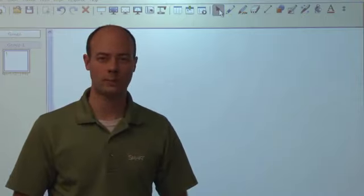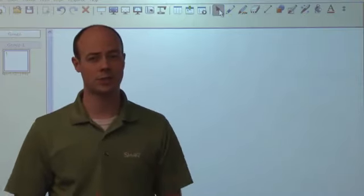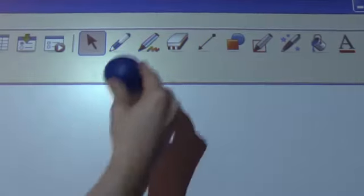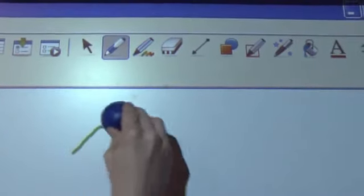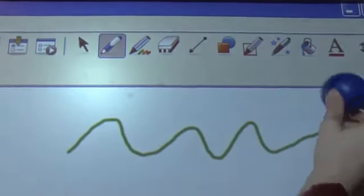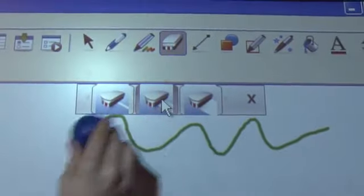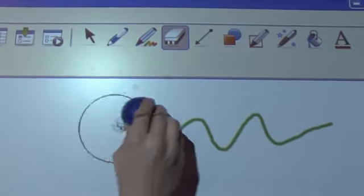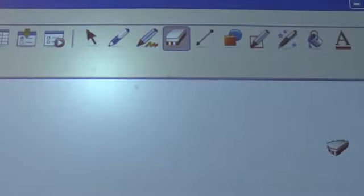To interact with the whiteboard using a tennis ball is just as easy as using your finger. Press it to the screen and drag it along like a mouse or pick up a pen tool and use it to write. For students with limited motor control and physical disabilities, a tennis ball is a fun way to get them involved in the action.